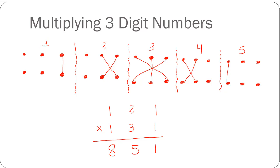The next step is multiplying 3 with 1 and 1 with 2 and adding the products, so 3 plus 2 gives me 5. And our final step is multiplying the rightmost digits which is 1 into 1, so 1. Our final answer is 15851.